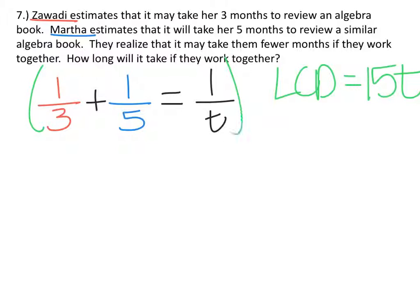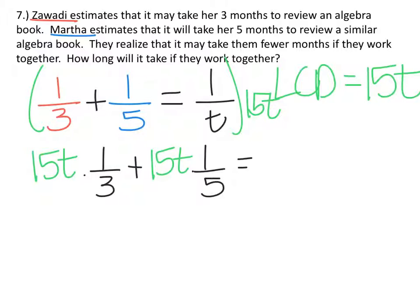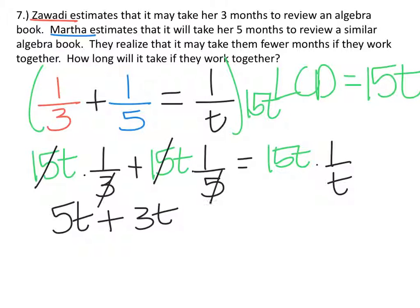Let's multiply everything in this equation by 15T. So we have 15T times one-third plus 15T times one-fifth equals 15T times one over T. 15T times one-third equals 5T because 15 divided by 3 is 5, plus 15T times one-fifth is 3T because 15 divided by 5 is 3.